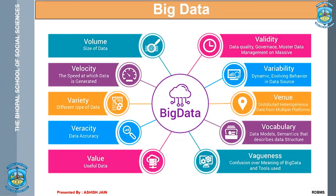Then validity — the data quantity is very important, and there is certain data from government and other agencies to be used for your purpose. Then variability — the dynamic evolving behavior in data sources constitutes variability. We have venue — data does not come from one particular source; we have multiple sources of handling and generating this data. Then vocabulary — there are different data models, different kinds of semantics, and different data structures used that make up the vocabulary of big data. Then vagueness — there may be confusion over the meaning of big data and the tools used, but we have to combine all the data together for a better perspective and better analysis.